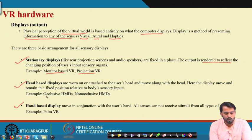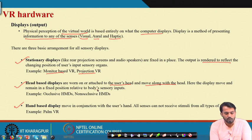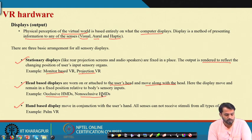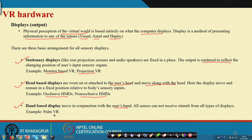Head-based displays are worn or attached to the user's head, moving along with it — the display moves and remains in a fixed position relative to the body's sensory inputs. Examples include occlusive HMDs and non-occlusive head mounted displays. Hand-based displays move in conjunction with the user's hand. Nowadays, hand-based displays are the least used, while head-based and stationary displays are mostly used for displaying sensory stimulation to the user.